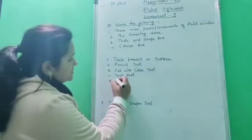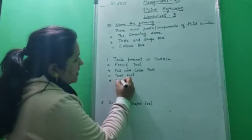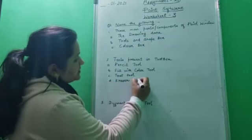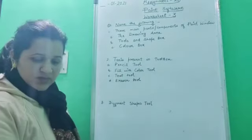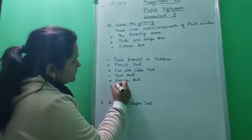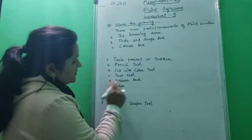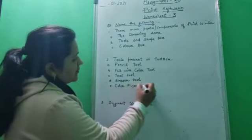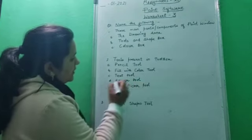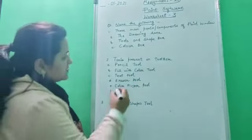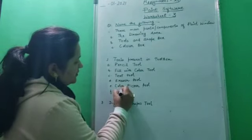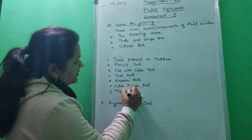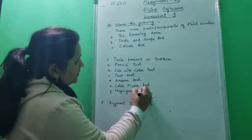Next is eraser tool. Then color picker tool. And the next one is the magnifier tool.